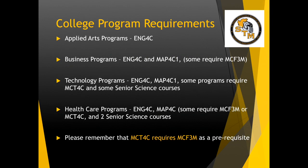College program requirements: Applied arts programs typically require English 4C. Business programs require English 4C and college level math Grade 12; some might require mixed level from Grade 11. Technology programs require English 4C, Grade 12 math, and some require MCT 4C and additional senior science courses. Some healthcare programs require English 4C, Grade 12 math — some might require mixed math or the Math for College Technology MCT 4C — and two senior sciences. Please remember that if you would like to take Math for College Technology, that requires the mixed level math to be completed in Grade 11.